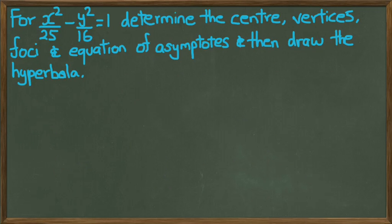So here's an example of a question. We have an equation, x squared over 25 minus y squared over 16 equals 1. We want to determine the center, the vertices, the foci, and the equation of the asymptotes. Then we're going to try and draw the hyperbola.